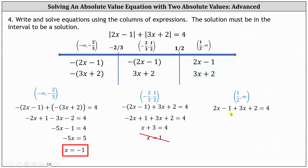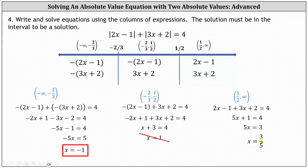For the third equation, combining like terms: we have 5x plus 1 equals 4. Subtracting 1 on both sides gives 5x equals 3. Dividing both sides by 5, we get x equals 3 fifths. Since 3 fifths is greater than 1½, it is in the interval from 1½ to infinity, indicating that x equals 3 fifths is a solution to the original absolute value equation.